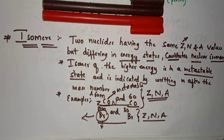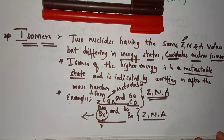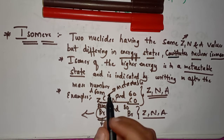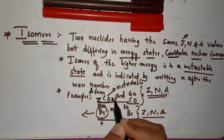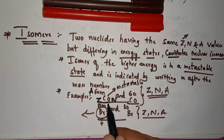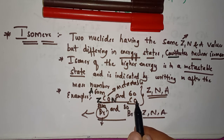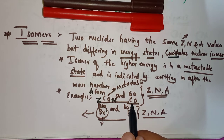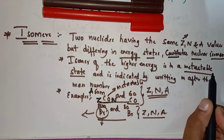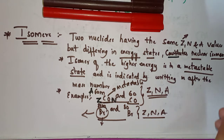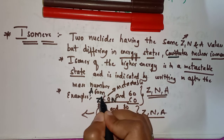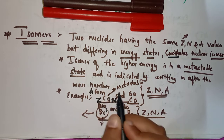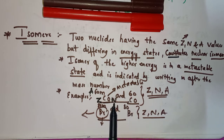Let us consider the examples of cobalt and bromine. In the cobalt example, we are representing the Z value, A value, and N value — that is, the proton number, atomic mass number, and neutron number. These two nuclides have the same Z, N, and A values, but the only difference is in their energy states. The isomer of higher energy is in a metastable state, and it is indicated by writing 'm' after the mass number.